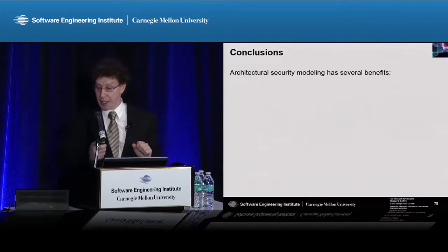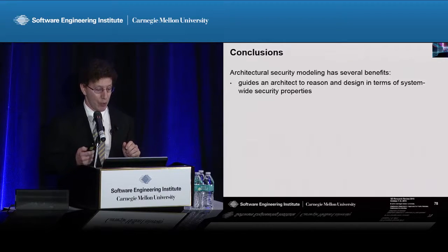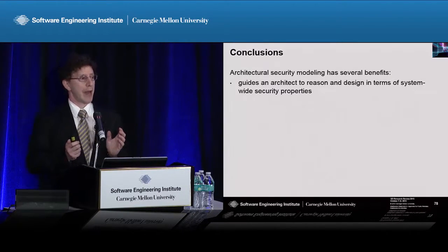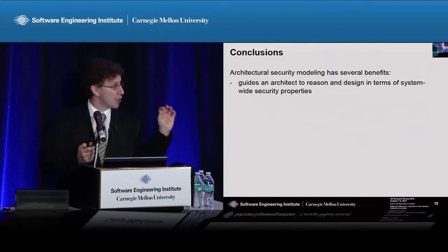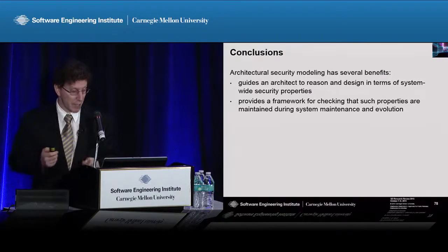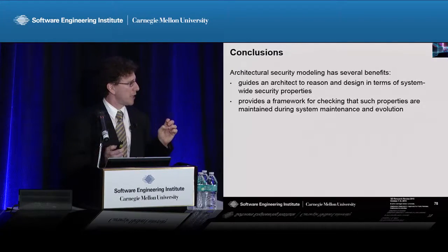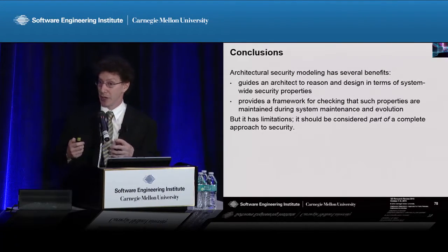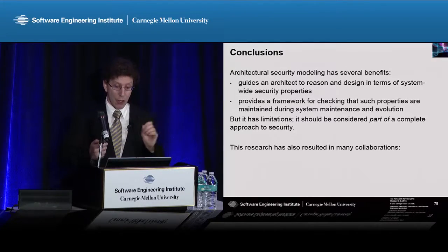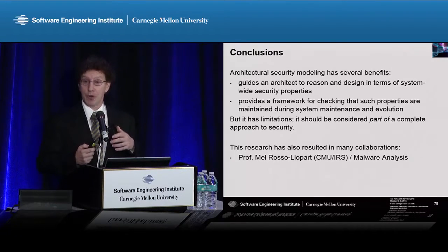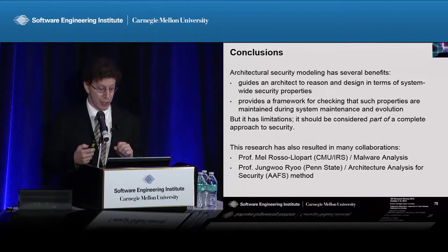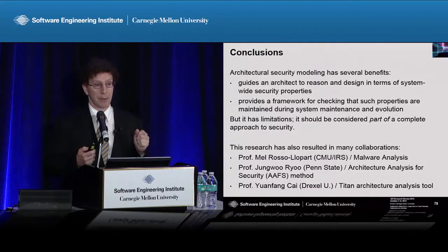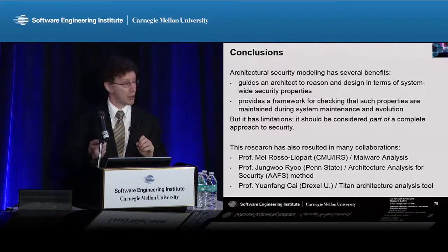What we found as part of our study is that architectural security modeling has some important benefits. It allows an architect to reason about and design a system in terms of properties that apply system-wide, rather than specifying security properties component by component or line of code by line of code. It provides a framework for checking these properties and ensuring they continue to hold as the system is maintained and evolves. But it has limitations — like anything else in software engineering, it's garbage in, garbage out. The research also resulted in collaborations including malware analysis research, an architecture analysis method, and a tool that looks at modularity flaws and relates those to security bugs.